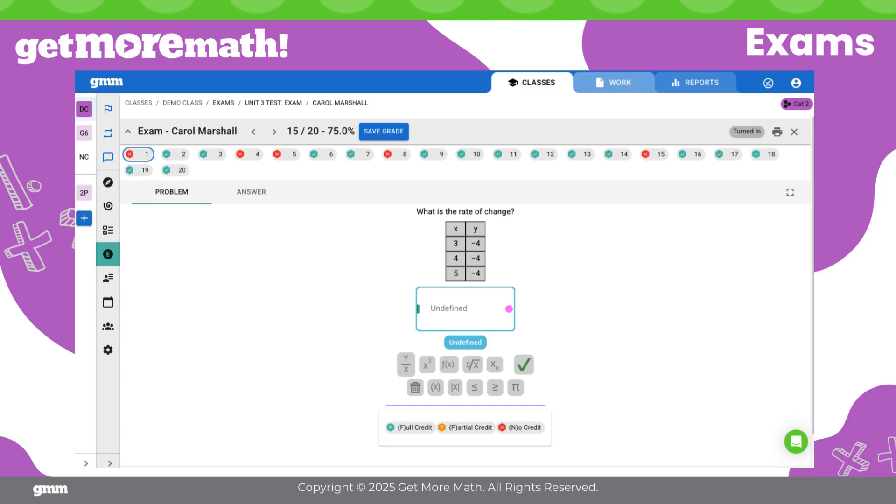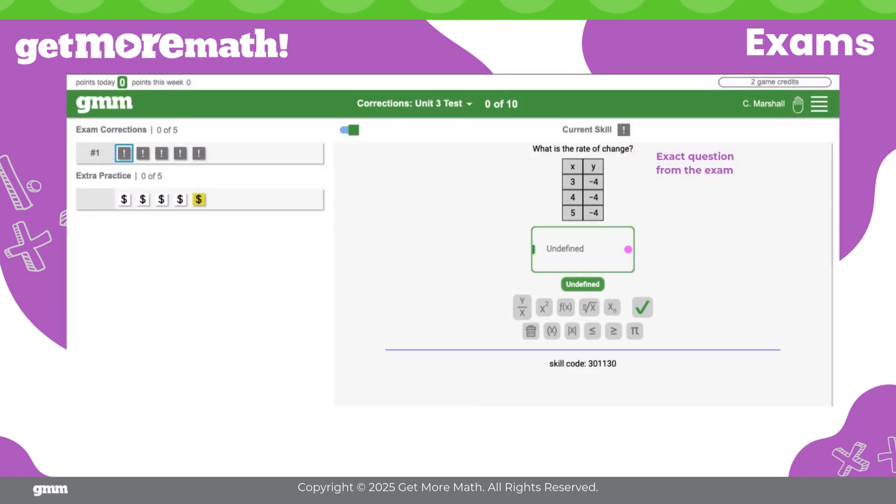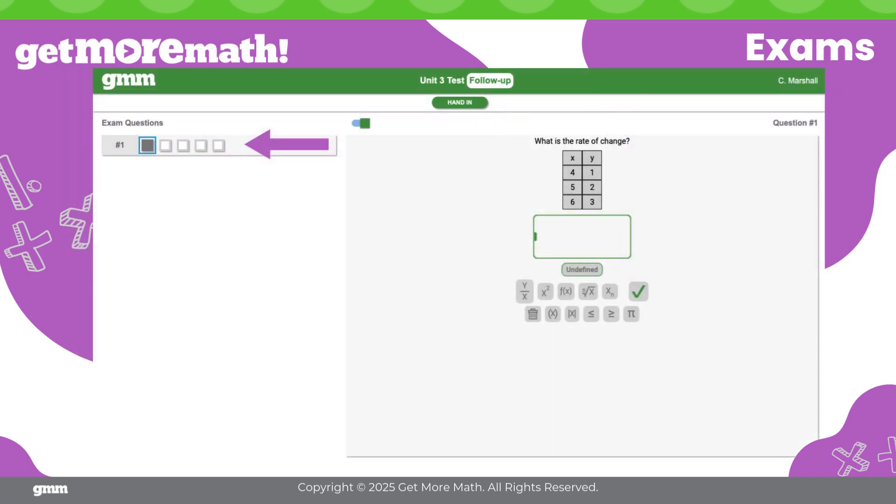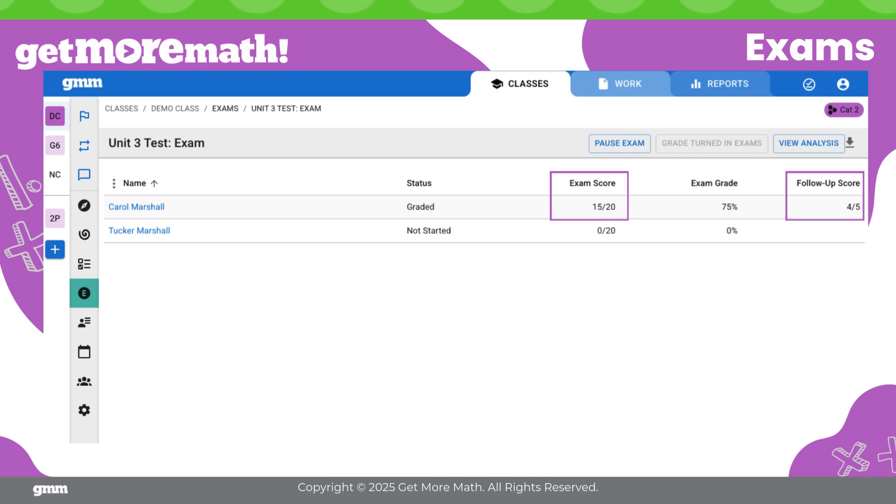Next, in order to address the areas of weakness identified by the exam results, GMM creates what is called a corrections assignment. Let's see what that looks like for this student. They've missed five of the 20 questions on the exam. The corrections assignment includes the exact exam questions that were missed along with the student's incorrect answers. Once the student has corrected every mistake, they are prompted to do extra practice with similar problems on each of the five skills they missed. Once the corrections assignment is completed, the student has the opportunity to demonstrate the growth they've made by taking what we call a follow-up test. The follow-up test is designed specifically for each student to include only the skills they missed on the original exam. Teachers can clearly see the original test results compared to the improvements made through the corrections and follow-up process.